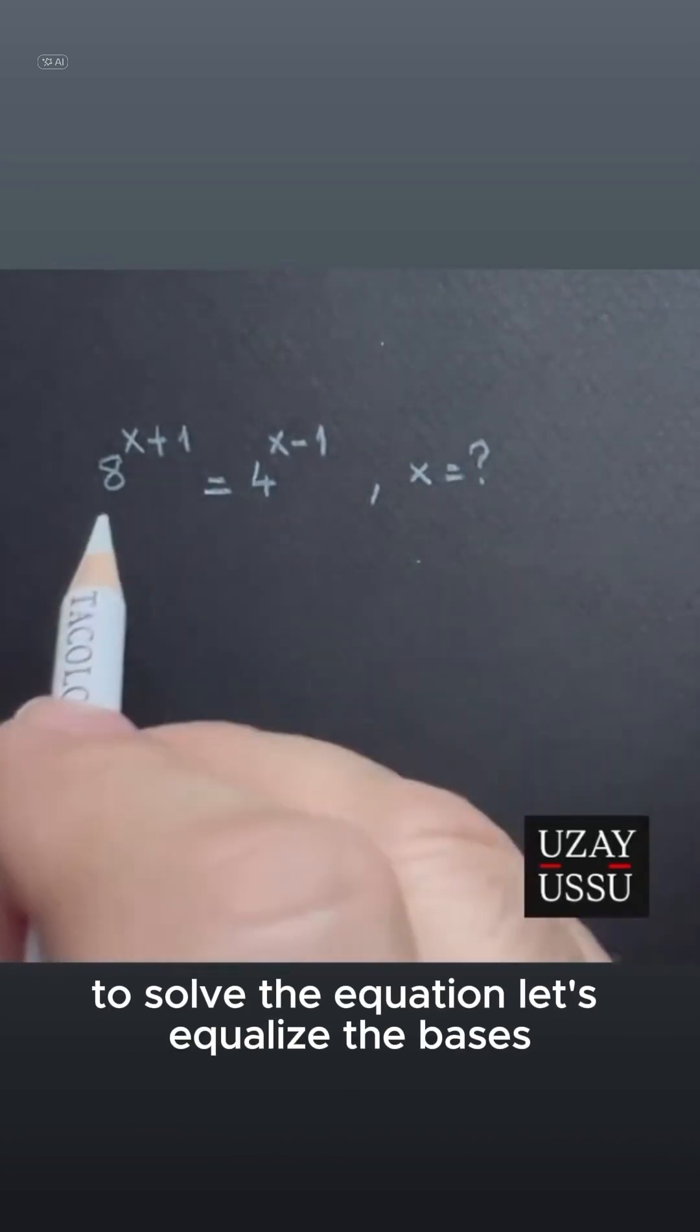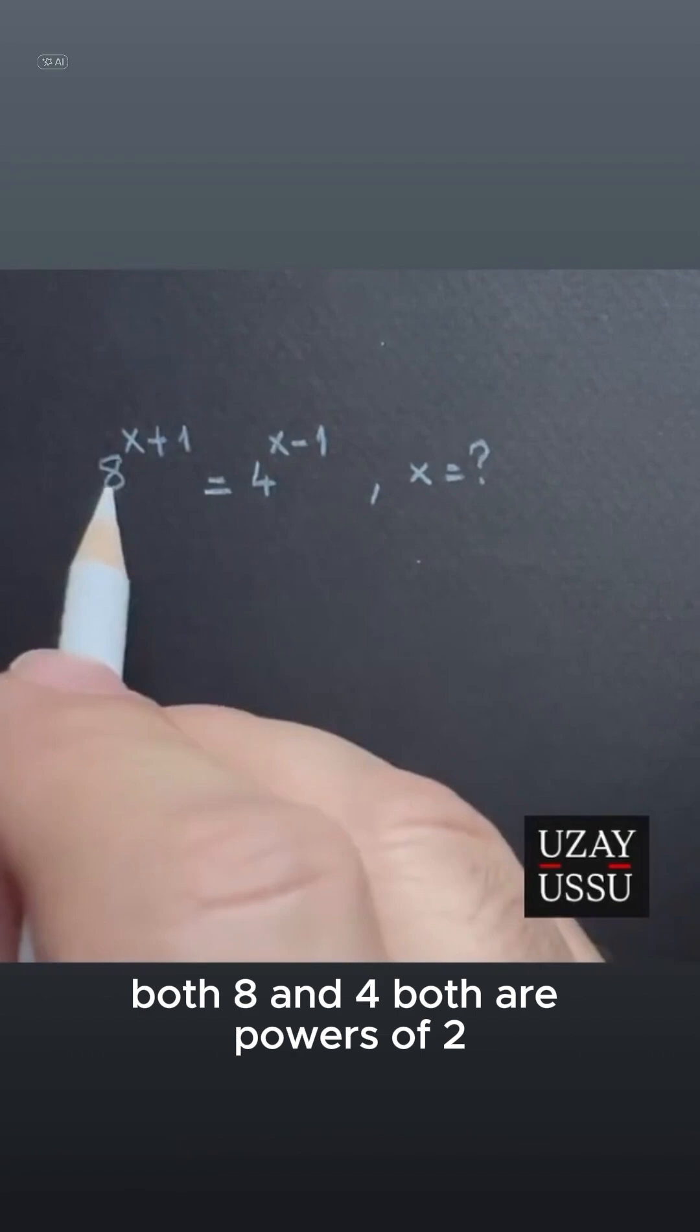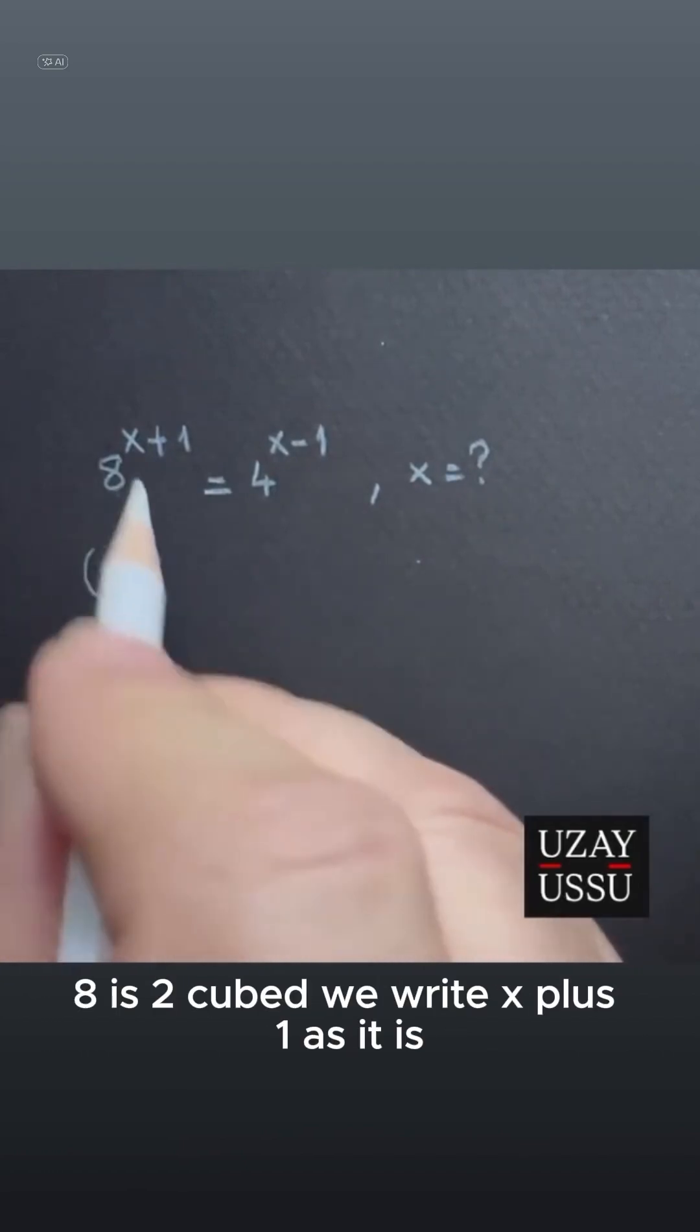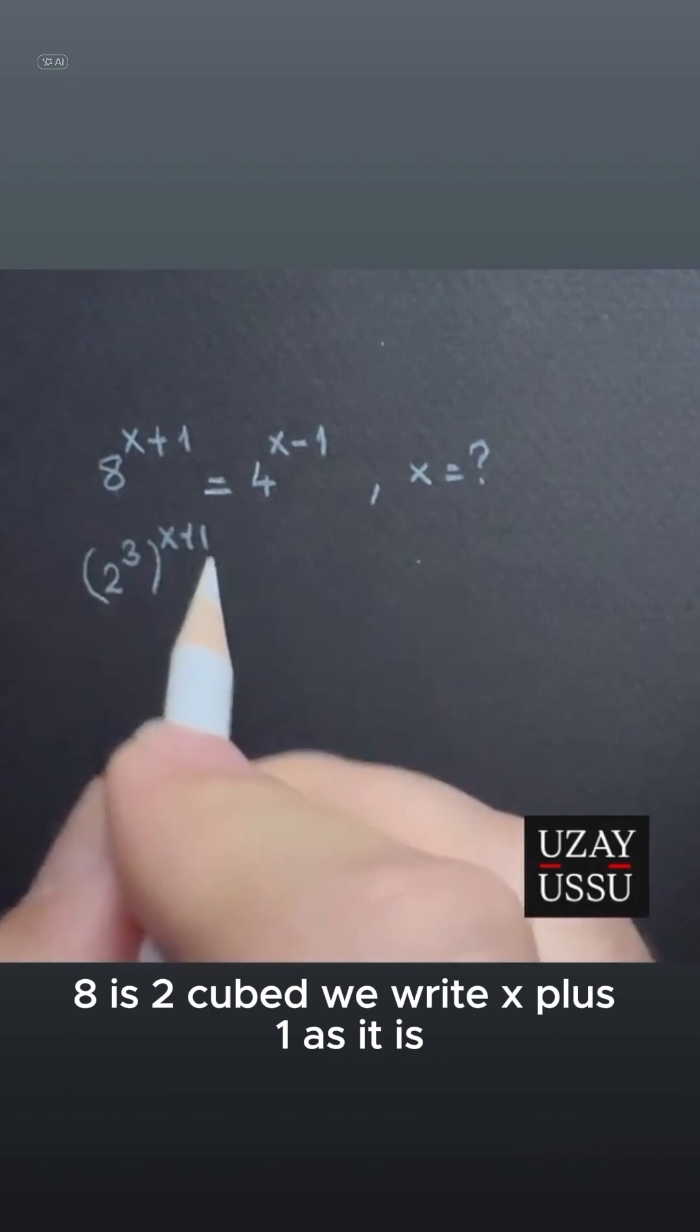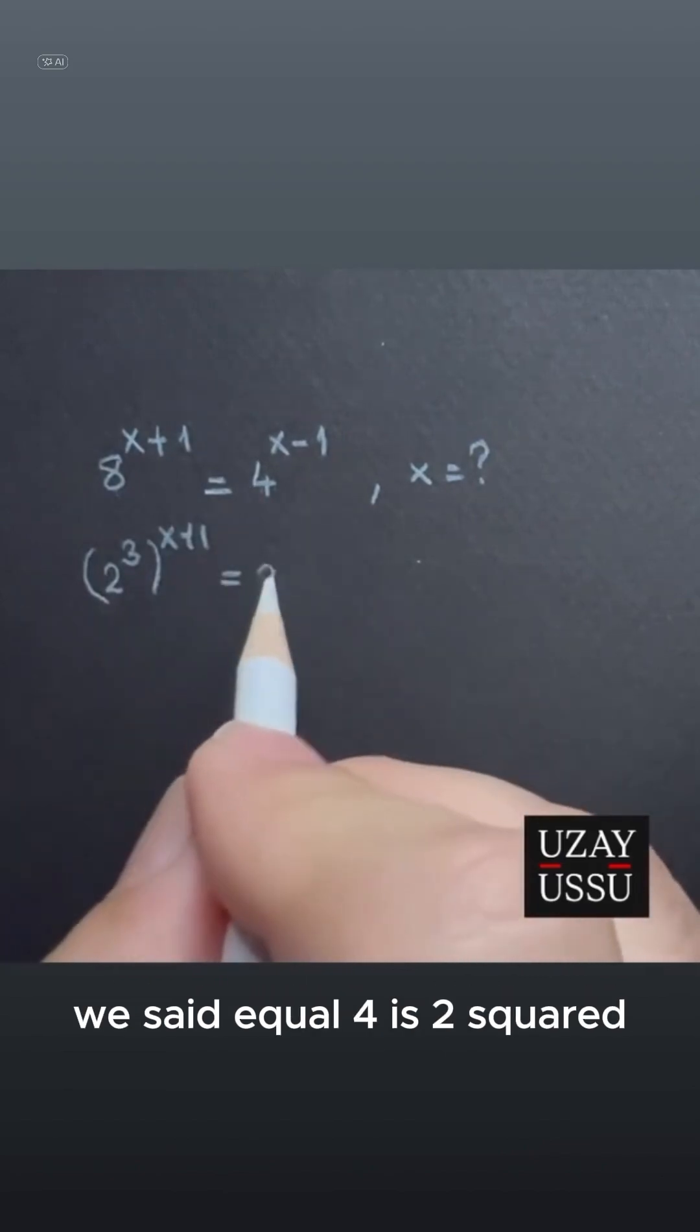To solve the equation, let's equalize the bases. Both 8 and 4 are powers of 2. 8 is 2 cubed, we write x plus 1 as it is. We said equal, 4 is 2 squared.